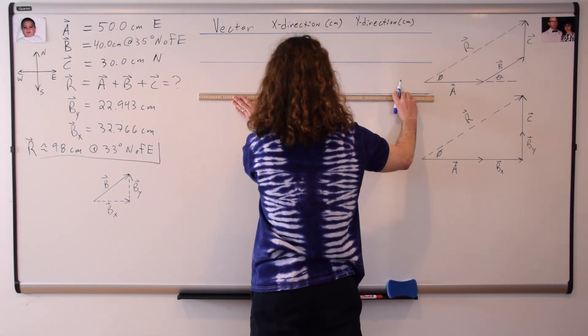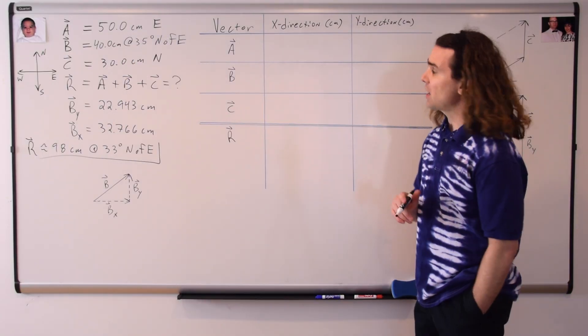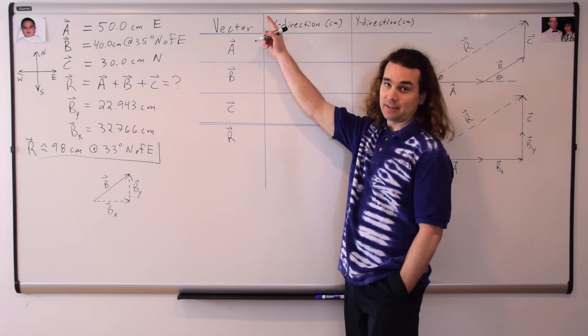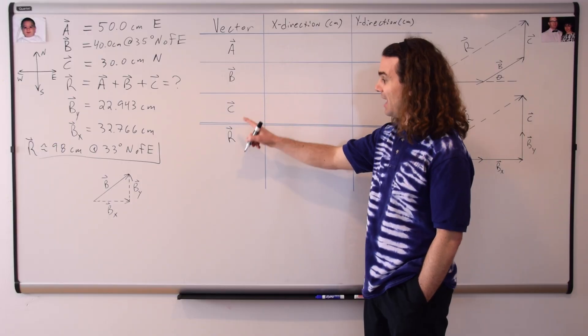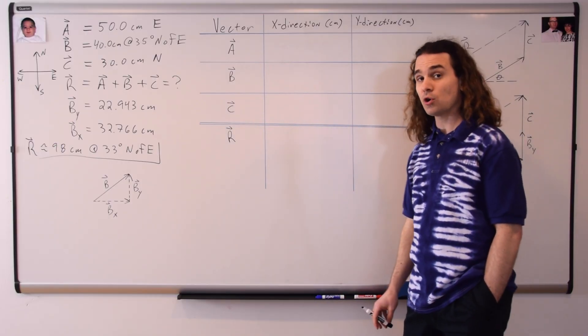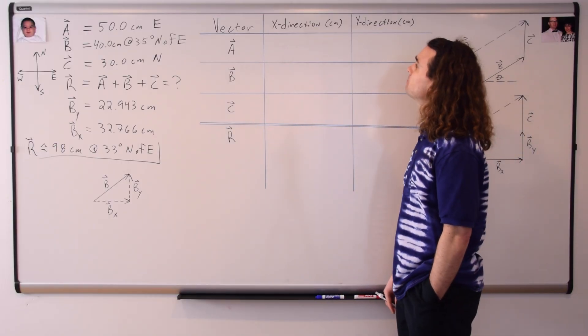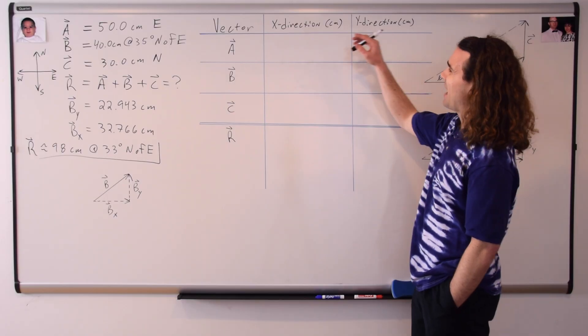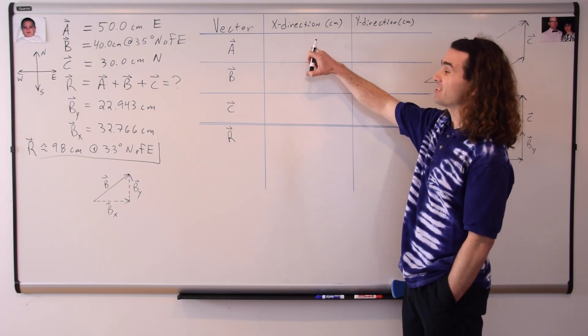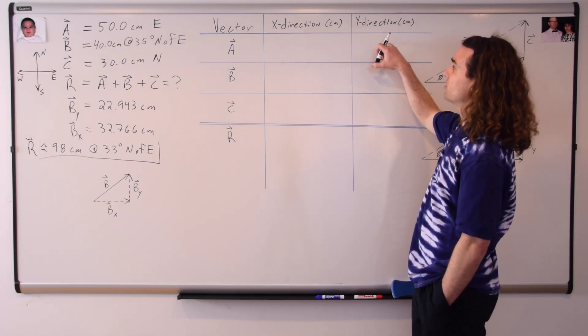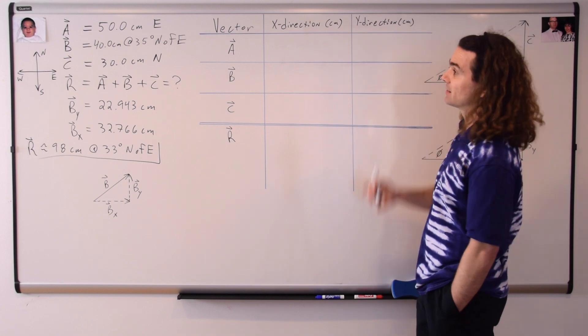In the first column, we have the names of the vectors a, b, c, and r the resultant vector or the total displacement vector. In the next two columns, we have the components of each of the vectors in the x and y directions, and both of those are in centimeters.